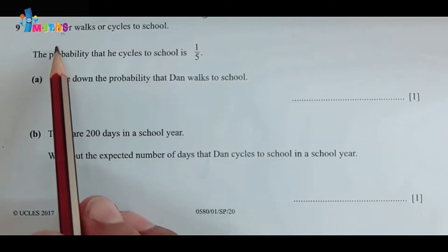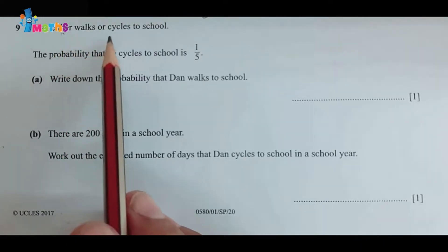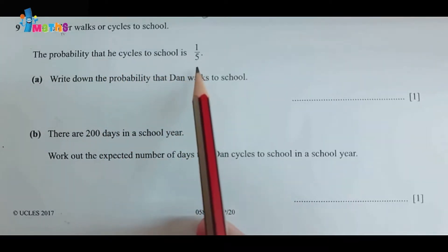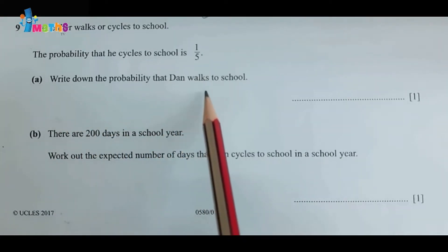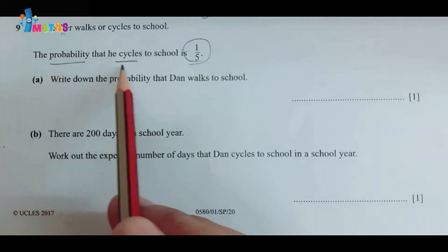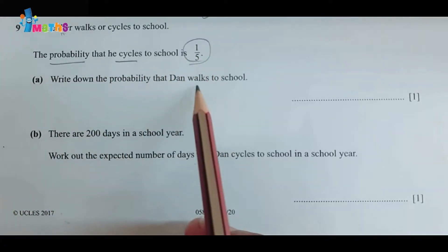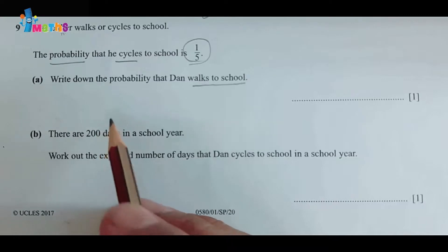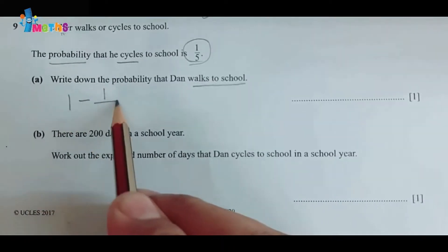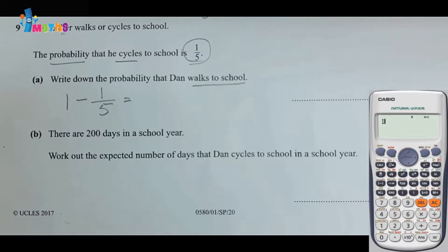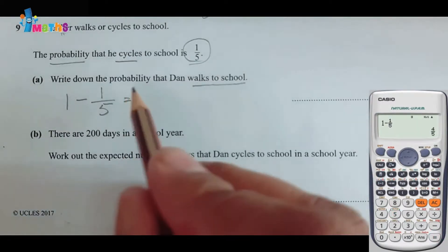Question number nine: Dan either walks or cycles to school. The probability that he cycles to school is 1/5. Write down the probability that Dan walks to school. The maximum probability can be 1, so 1 minus 1/5, which we'll check with the calculator: 1 minus 1/5 is equal to 4/5.